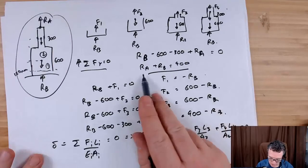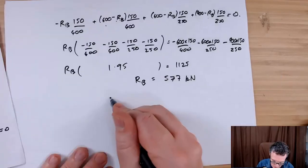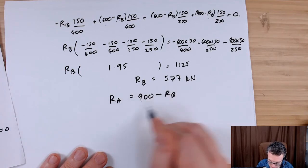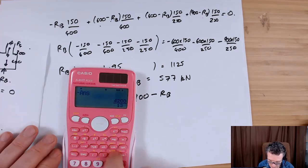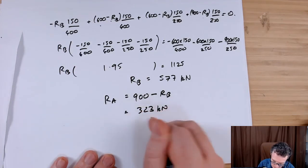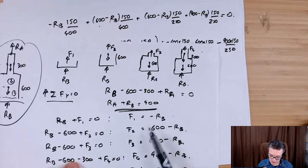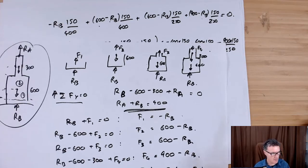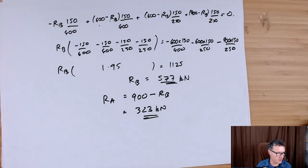Now I want to find RA. From our global equilibrium equation: RA equals 900 minus RB, which gives approximately 323 kilonewtons. There you go — and if I wanted to, I could go back and substitute these in to find the internal forces and stresses, which might be of interest. That's question 2.2 done — those are our final answers: RB ≈ 577 kN and RA ≈ 323 kN.